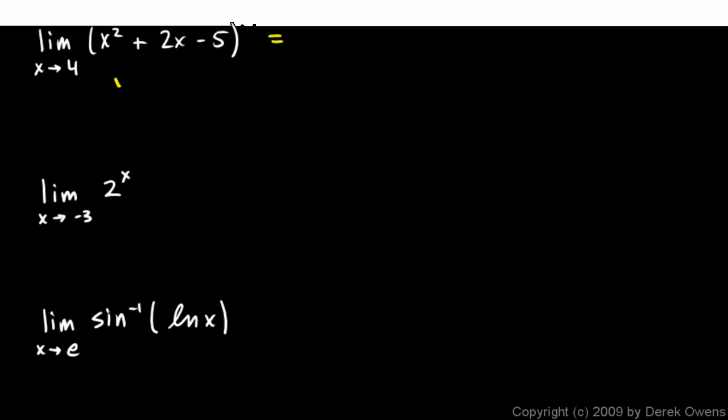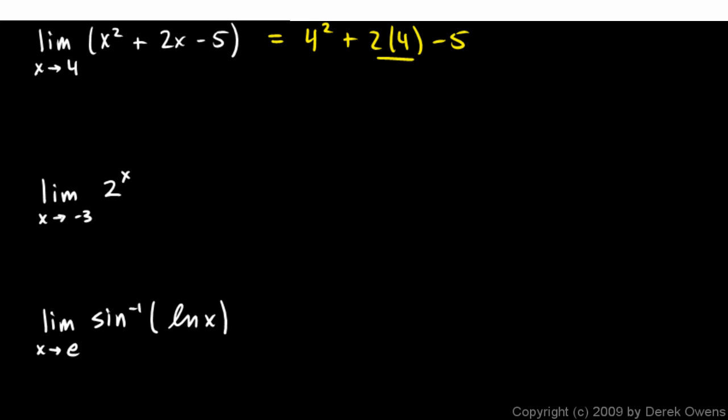This simply ends up being 4 squared. The limit as x approaches 4 of x squared plus 2x minus 5, so it's going to be 4 squared plus 2 times 4 minus 5. And we can do that in our heads. That's 16 plus 8 is 24 minus 5 is 19. And that's our answer.